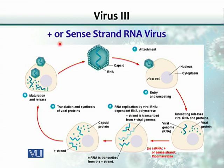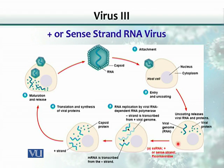For a plus-sense (or sense-strand) RNA virus, the virus has a unique way of replication. The virus attaches to the cell and gets uncoated. Since this is a plus-sense strand, it is basically equivalent to messenger RNA. That means this RNA can be directly translated into early proteins as well as late proteins.